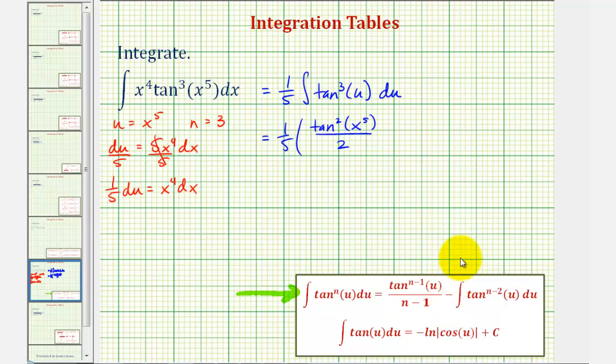Then we have minus the integral of tangent to the power of n-2, which in our case is 3-2 or 1. So we have the integral of tan(u) du.